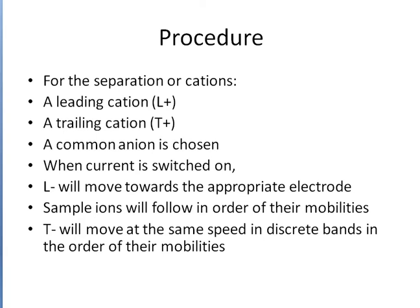With hands-on experience with electrophoresis, we can improve our understanding. For the separation of cations, a leading cation and trailing cation are used, with a common anion chosen. When current is switched on, L will move towards the appropriate electrode. Sample ions will follow in order of their mobilities. T will move at the same speed in discrete bands in the order of their mobility.